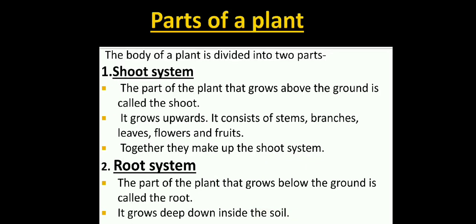Parts of a plant. The body of a plant is divided into two parts: shoot system and root system. The part of the plant that grows above the ground is called the shoot. It grows upwards. It consists of stems, branches, leaves, flowers and fruits. Together they make up the shoot system.